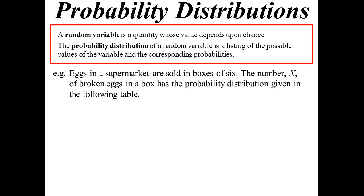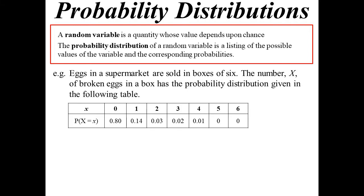Here's a little example. Eggs in a supermarket sold in a box of six. X is going to represent the number of broken eggs in a box. So the probability distribution is something like this. Apparently there's no chance that every egg will be broken or five of the eggs will be broken. That is a probability distribution.